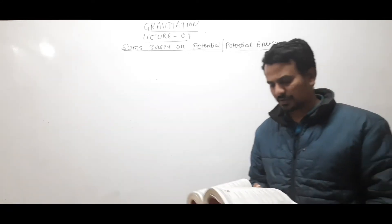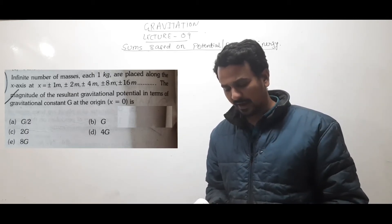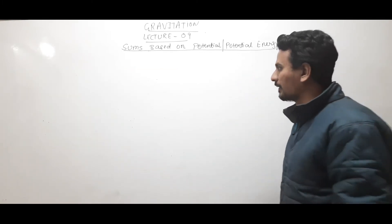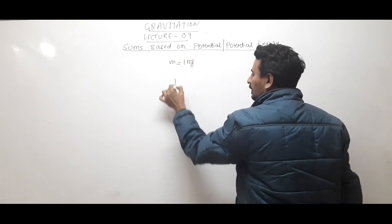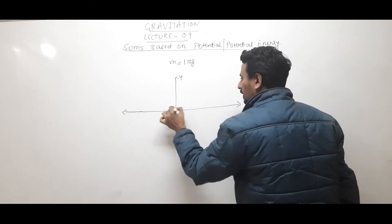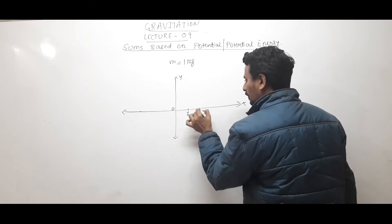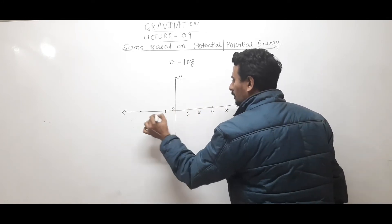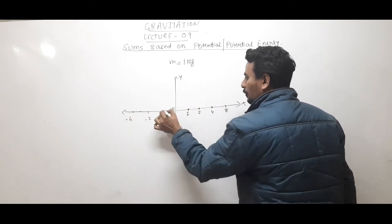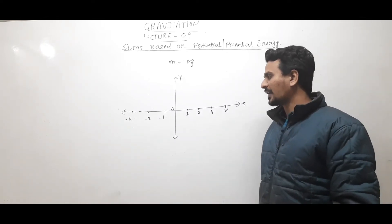The next question: an infinite number of masses, each of 1 kg, are placed along the x-axis at ±1 m, ±2 m, ±4 m, ±8 m, ±16 m, and so on up to infinity. Find the magnitude of the gravitational potential at the origin.